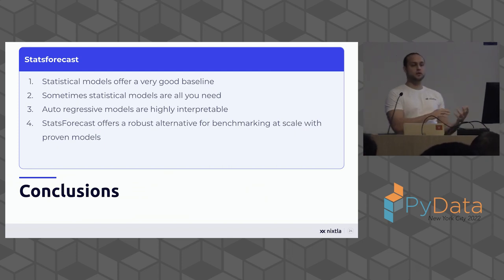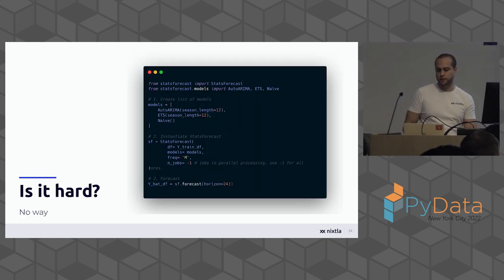So it's not only worse in terms of accuracy, it's really orders of magnitude more expensive, which is costing us money and time that shouldn't be used computing. Here again, what we are trying to show is that new is not always better and that big names are not always better. So do the job that is necessary and go back to the basics and maybe start with some classical benchmarks. So in conclusion, from this first side of the story, we do think that statistical models are a very good baseline, that sometimes statistical models are all you need, and we do believe that StatsForecast does offer a robust alternative for benchmarking at scale with proven models. We also believe that it's easy. Here you can see how to train different models in less than 10 lines.